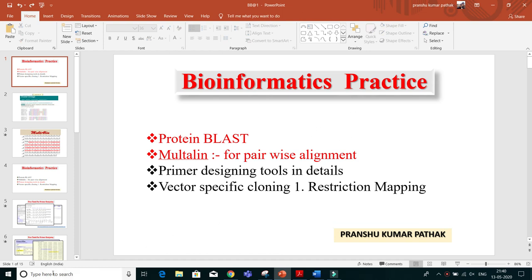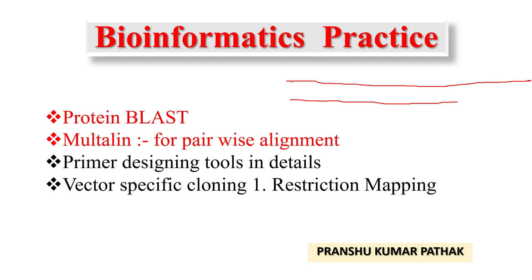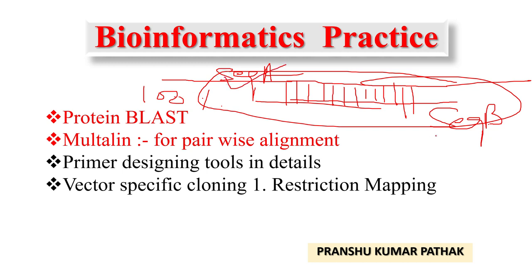Pairwise alignment means you have two sequences — sequence A and sequence B — and you have to find out how much sequence A is similar to sequence B. It is impossible for them to match 100 percent, but they will match to some degree. You need to know how much sequence A is matching with sequence B.